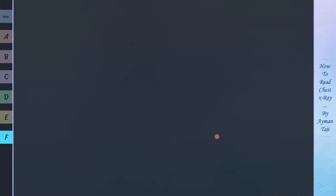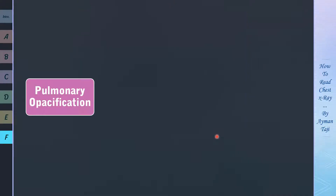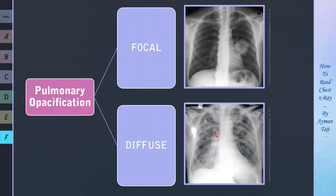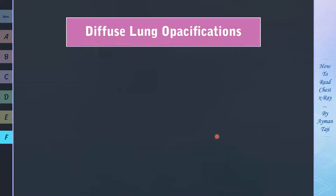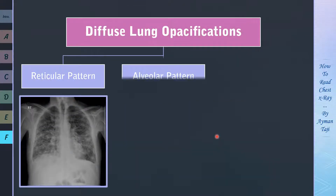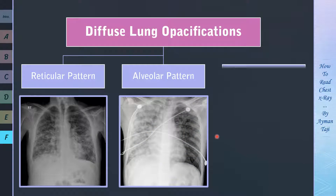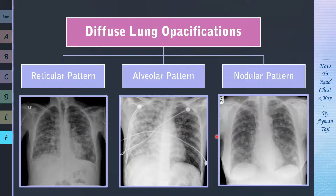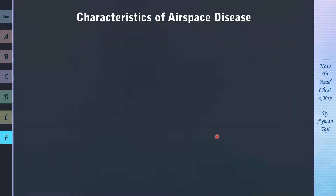As we've said before, if you see an opacification — lungs are more opaque than normal — the first question to ask yourself is whether it's focal or diffuse. And if it's diffuse, then is it reticular like a network of lines, alveolar or cloud-like opacities, or a nodular pattern? We've talked in detail about the reticular pattern in the previous lecture, and now we'll move on to the alveolar pattern.